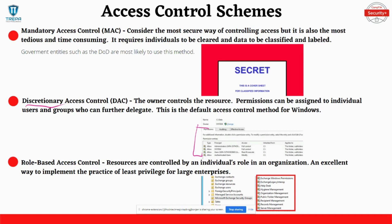Role-based access control means that resource access is controlled by an individual's responsibilities or job role. For example, if an administrator is hired as a database engineer, they will be given access to the database servers, but they will not need access to the exchange servers because that is not part of their role as a database administrator.